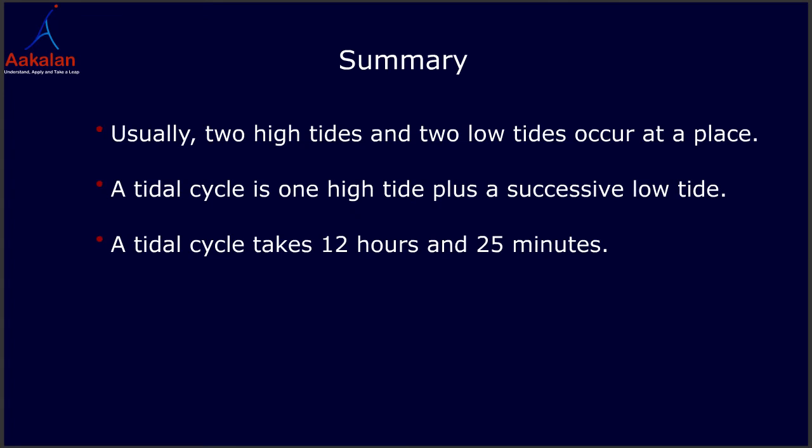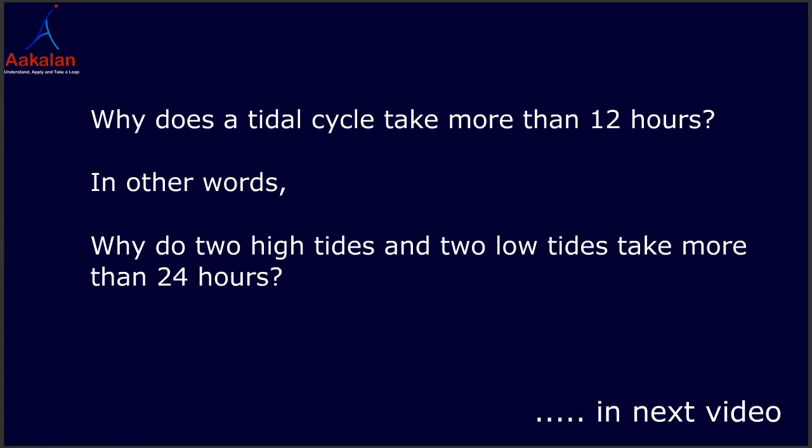To summarize the topic: usually, two high tides and two low tides occur at a place. A tidal cycle is one high tide plus a successive low tide. A tidal cycle takes 12 hours and 25 minutes. Then, why does a tidal cycle take more than 12 hours? In other words, why do two high tides and two low tides take more than 24 hours? In the next video.